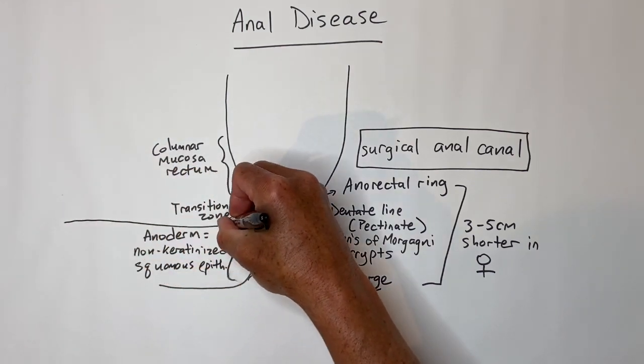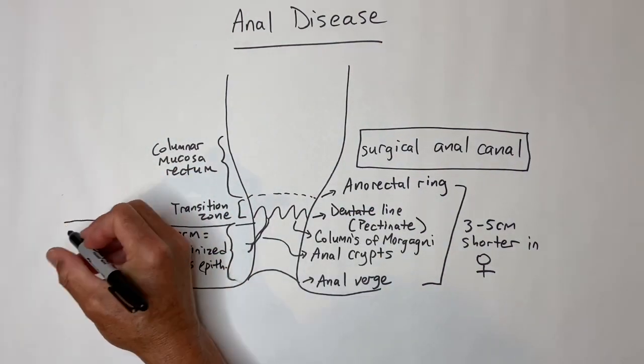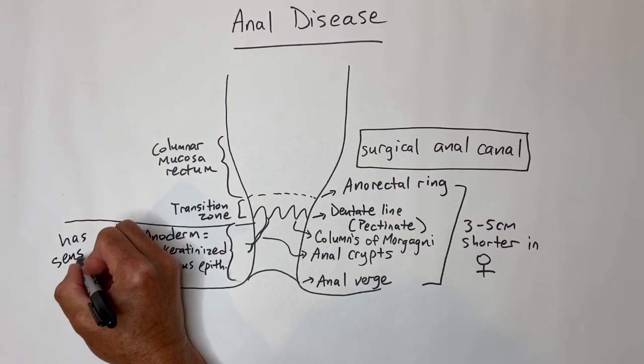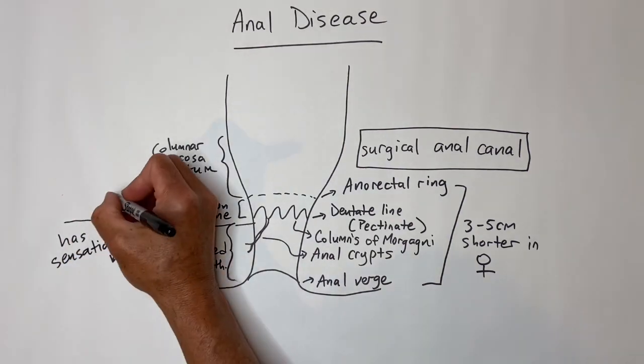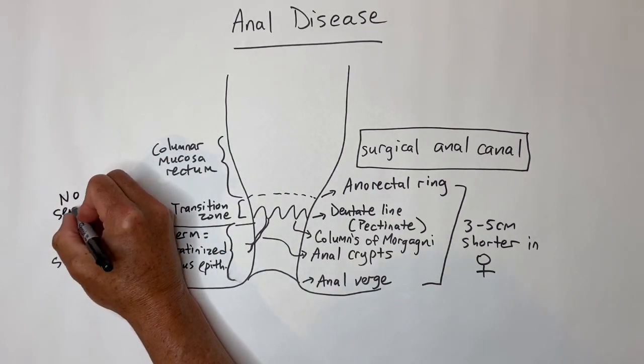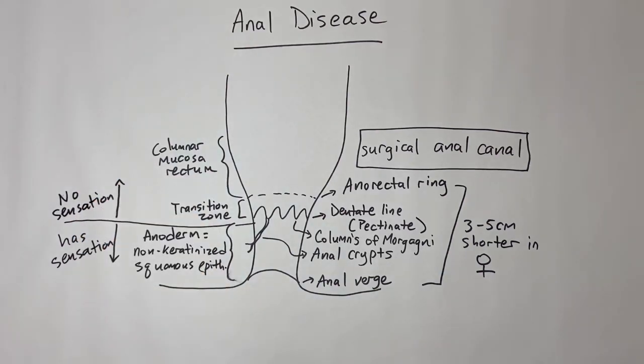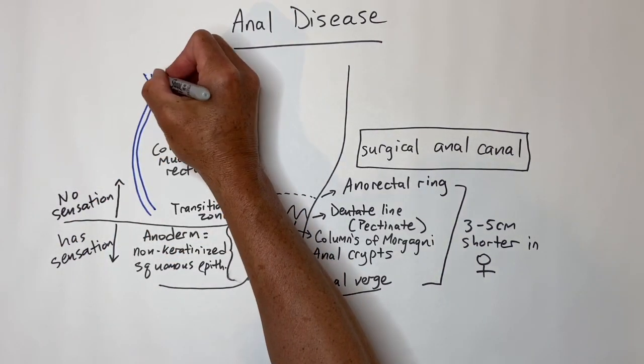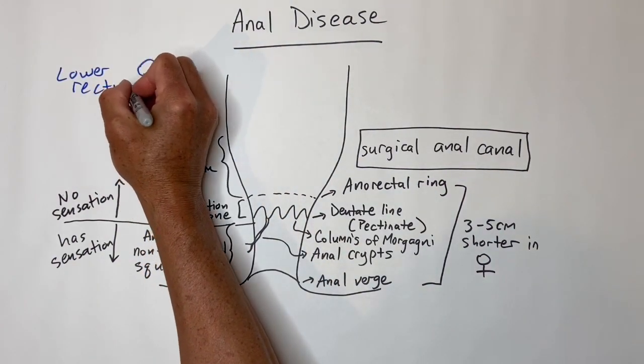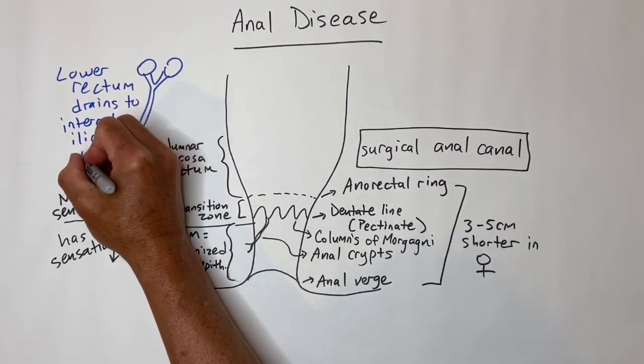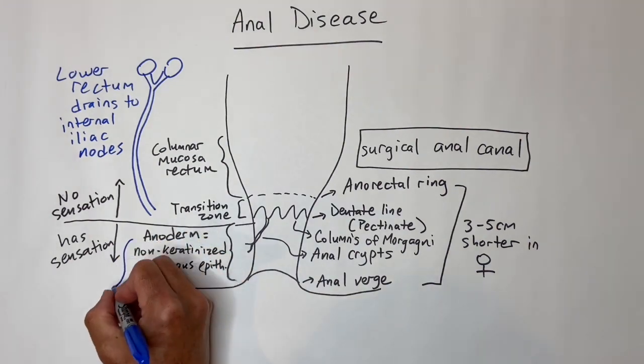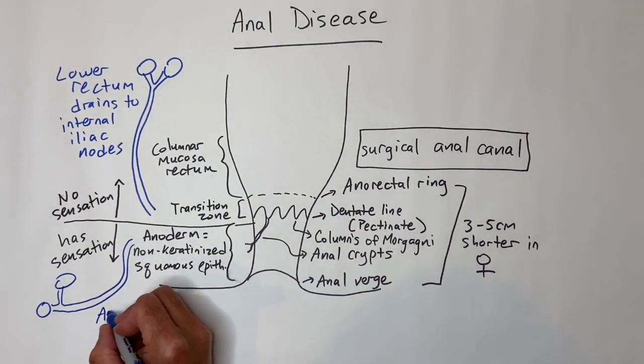The dentate is important because it is a margin for different innervation, blood supply, and venous and lymphatic drainage, as well as the presence below or lack above of sensation. Lower rectum can have lymphatic drainage to internal iliac nodes and sometimes the inguinal nodes, whereas the anal canal primarily drains to inguinal lymph nodes.